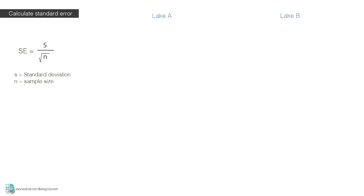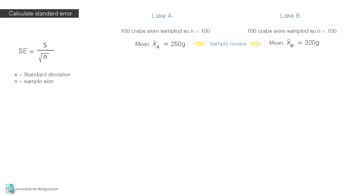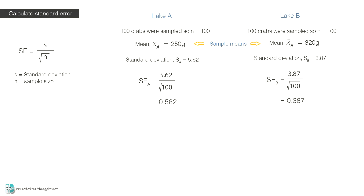Let's say I want to find out the mean mass of a type of crab in two different lakes. I can't weigh every crab in those lakes, so I capture 100 of them from each of the lakes and calculate the mean. For lake A, the mean is 250g. For lake B, the mean is 320g. These are the sample means for A and B. I then calculate the standard deviation for both of the samples. The standard error for sample A will be 5.62 divided by the square root of 100, which is 0.562. The standard error for B is 0.387.